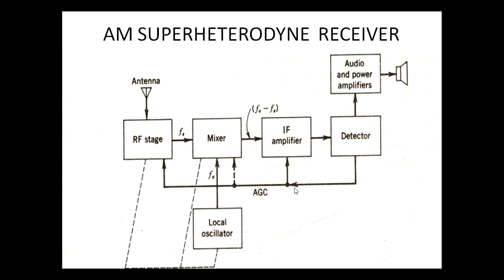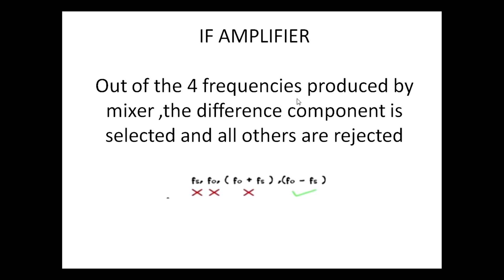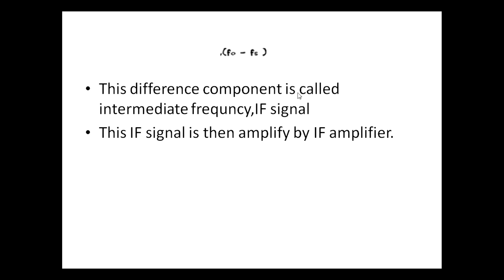The next stage is called the intermediate frequency amplifier or IF amplifier stage. Out of the frequencies produced by the mixer, the difference component (F0 - FS) is selected and all others are rejected. This difference component is called intermediate frequency, because its frequency lies in between the frequency of the selected RF signal and the local oscillator signal. That is why it is called intermediate frequency signal or IF signal. F0 minus FS is the IF signal, which is then amplified by the IF amplifier.